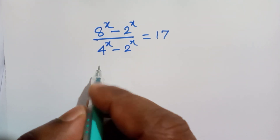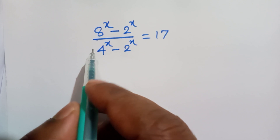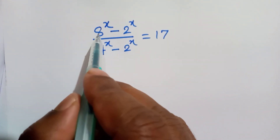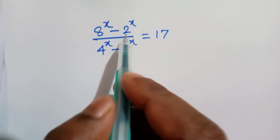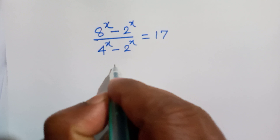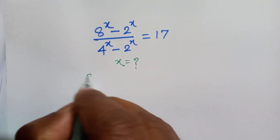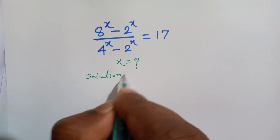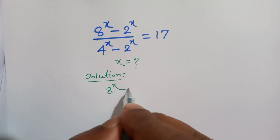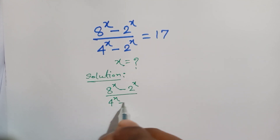Hello everyone, welcome back to my channel Math Points. Today I am going to show how to solve this exponential equation where 8 to the power x minus 2 to the power x, divided by 4 to the power x minus 2 to the power x, is equal to 17. Here x is equal to? Let's find the solution. We have 8 to the power x minus 2 to the power x divided by 4 to the power x minus 2 to the power x is equal to 17.